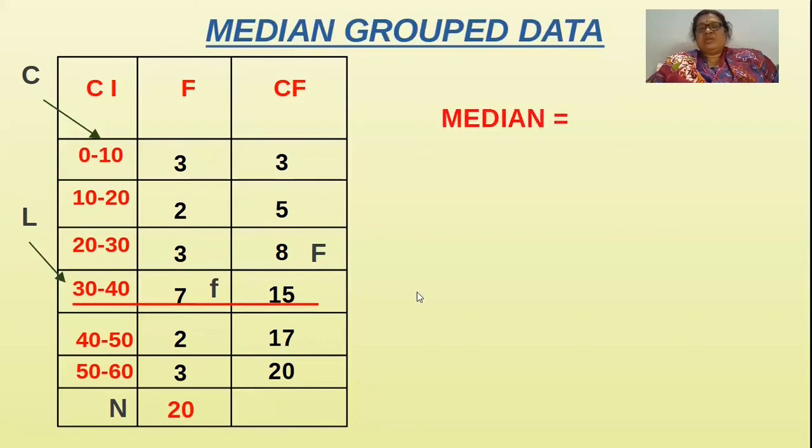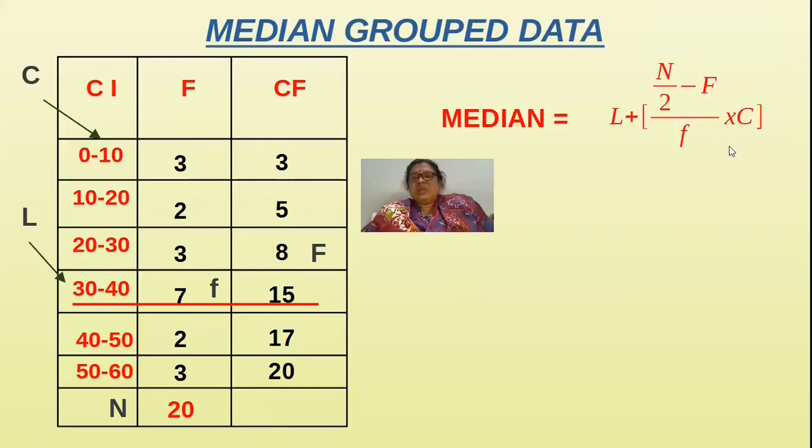Now we will write down the formula. The formula is L plus N by 2 minus capital F by small f into C. In your textbook something has written C, F and some H here. This is very easy to remember the formula. L plus N by 2 minus capital F by small f into C.